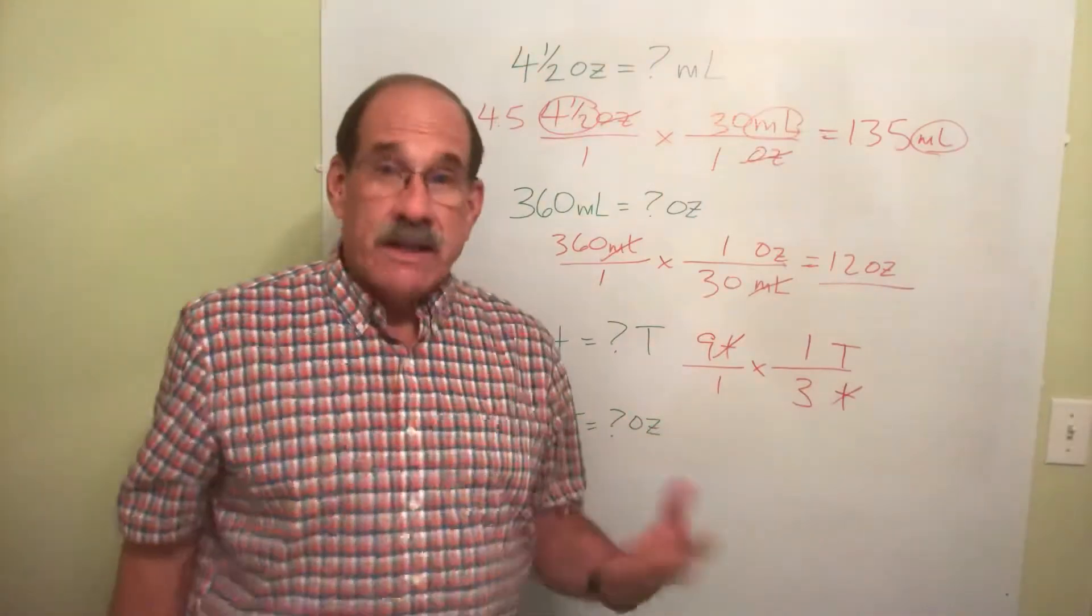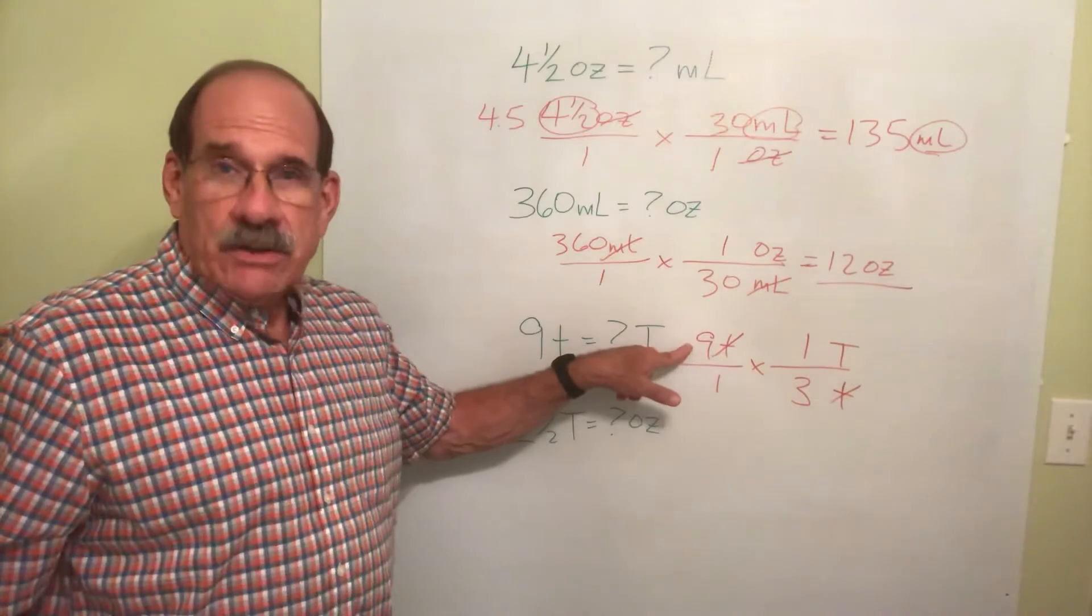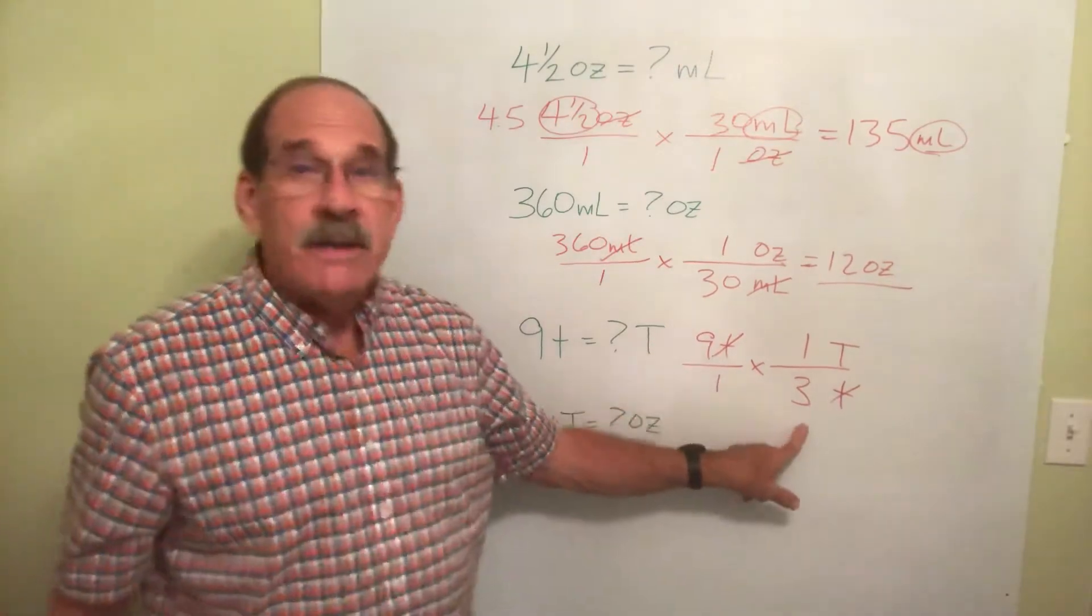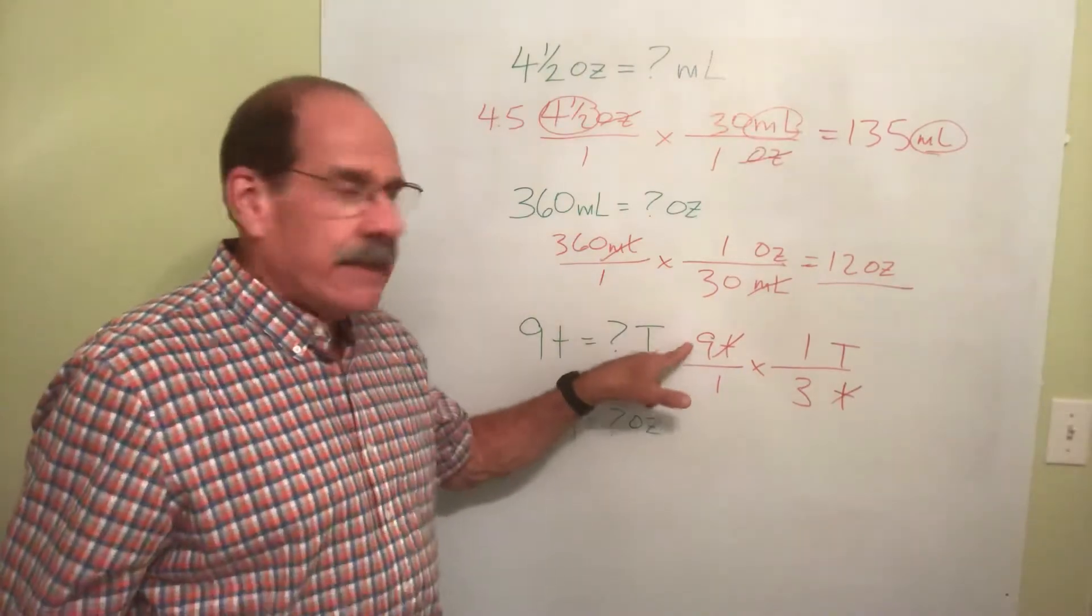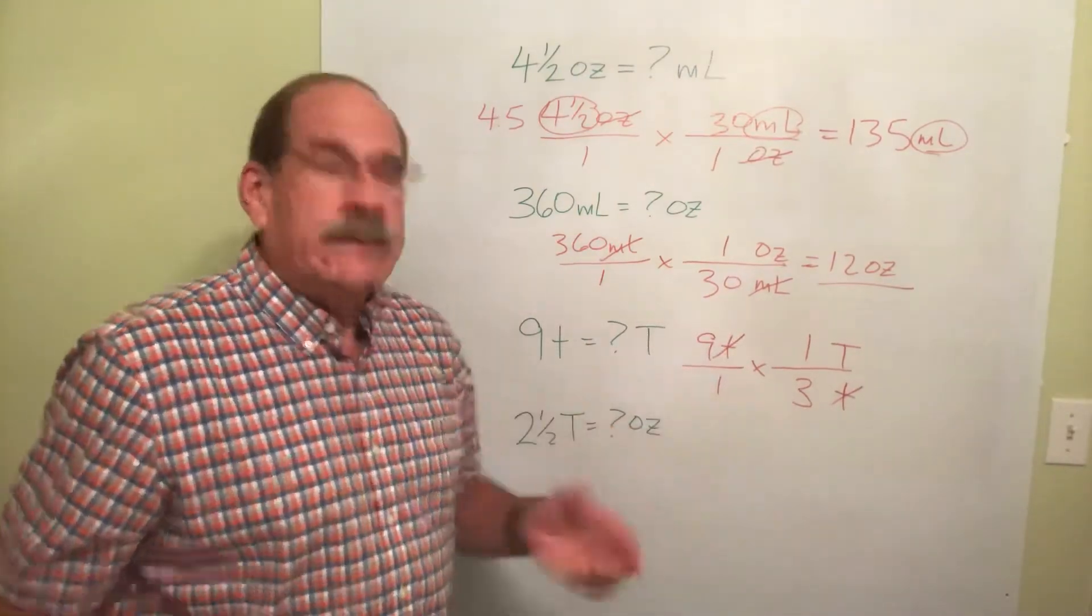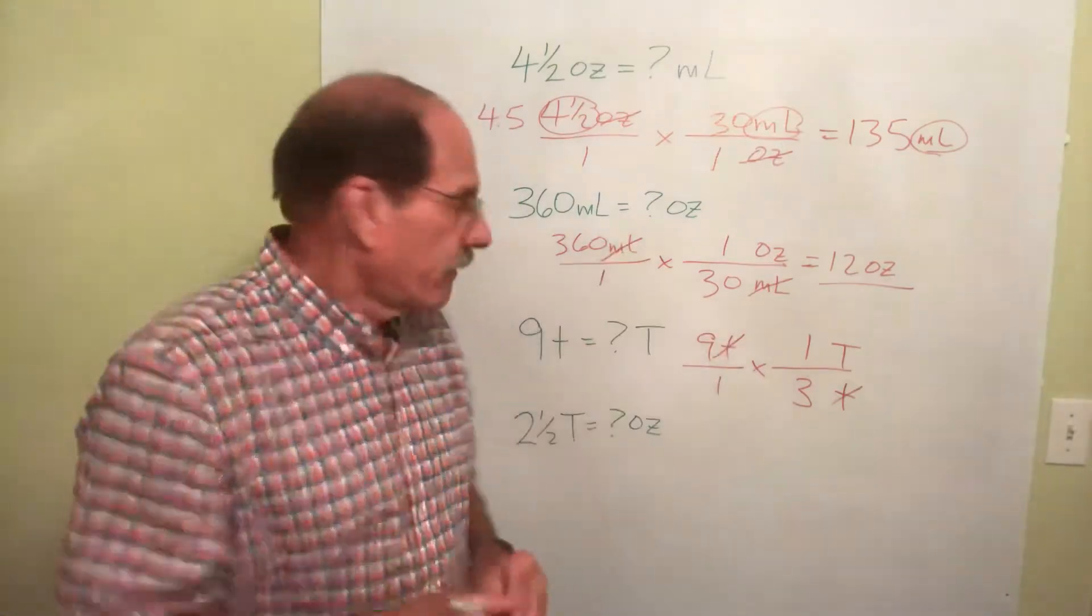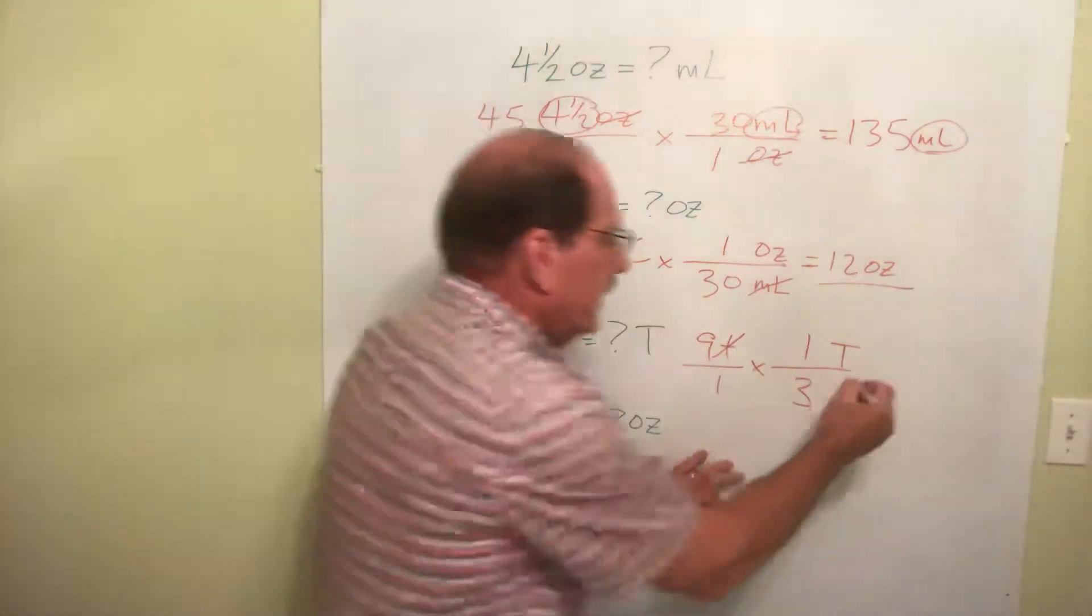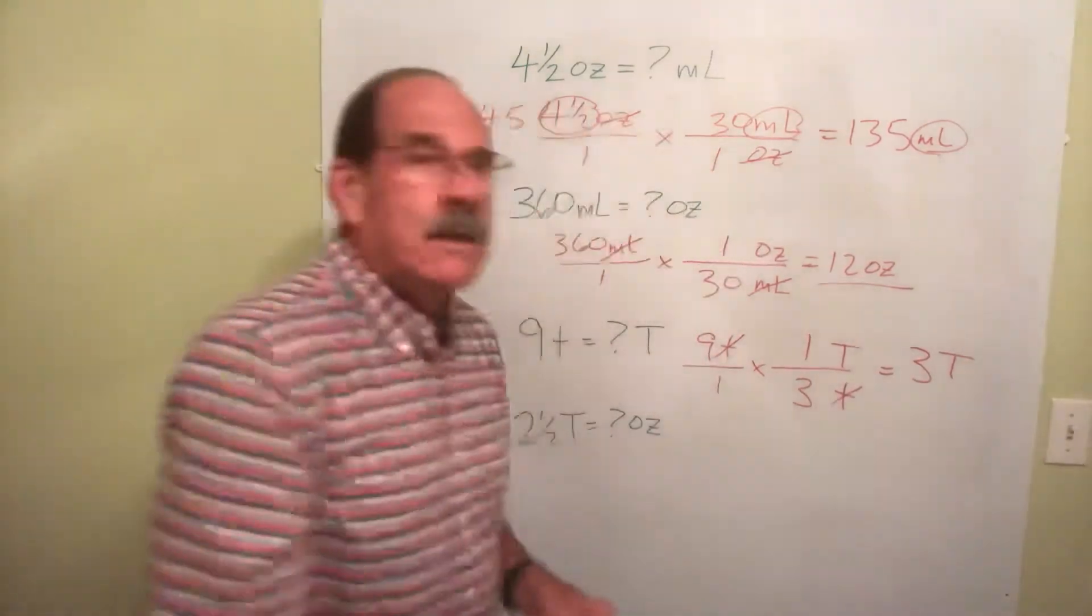And I can see the only thing left will be the tablespoons. Nine's on the top, it's a numerator. Three's on the bottom, it's the denominator. So what do I do? Nine divided by three. Let's see, if you need your calculator that's fine. If you don't, of course that's better. Nine divided by three is three. Three tablespoons.